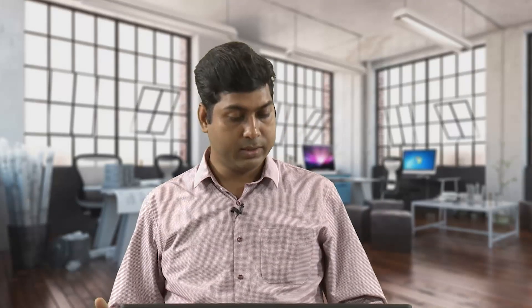We learnt the definition of architecture where it was described as the articulation of space with the application of technology and science. Now let us see the definition of building: it is an envelope that encloses and subdivides space in order to create a protected environment. As I mentioned in lecture 1, in the primitive age people started building because they had to protect themselves from external dangers — from the weather and from other animals. This need for safety and protection was the need to make something called shelter, which we normally name as a building.